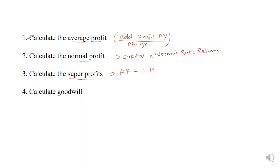After calculating super profit, you have to calculate goodwill. Whatever is the super profit you get in step 3, multiply that by the number of years of purchase, which will be given in the question. That gives you goodwill.